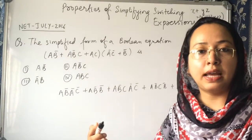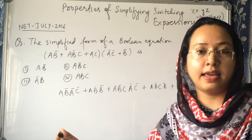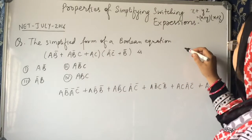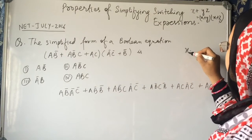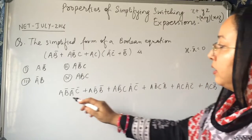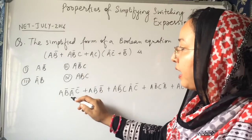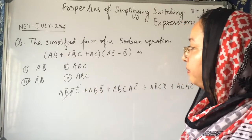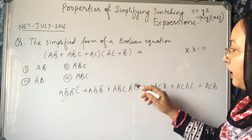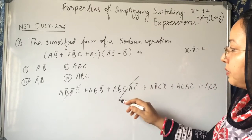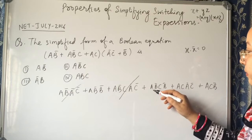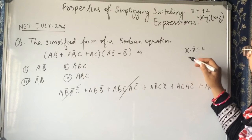When we multiply x into x̄, it becomes 0 — meaning the AND of x and x̄ is 0. So terms containing a and ā will become 0, and terms containing b and b̄ will also become 0.